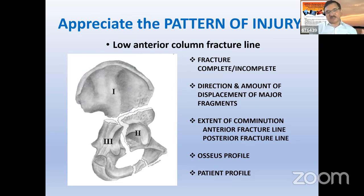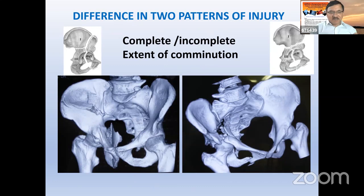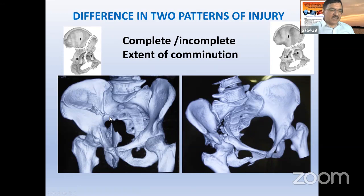When dealing with this fracture, one must consider: is the fracture complete or incomplete? What is the direction and displacement? How much comminution is there? What is the bone quality and patient profile? In the low variety, displacement is almost always present, whereas in the high variety the fracture may miss certain areas and remain partially undisplaced. This is an important distinction.